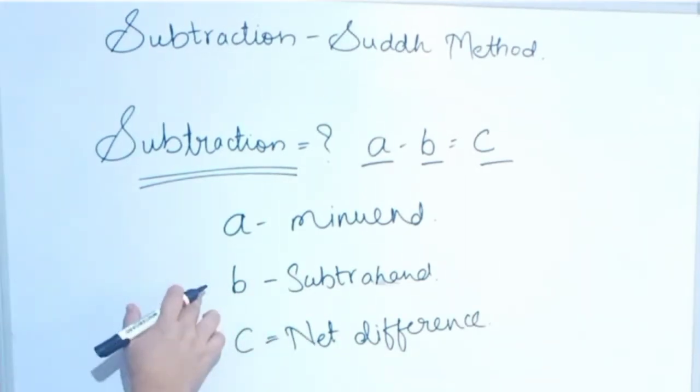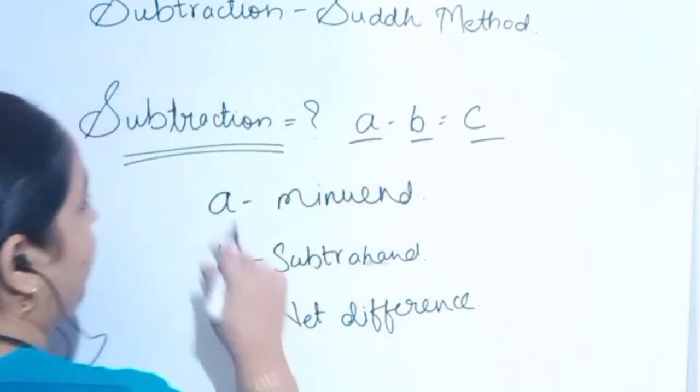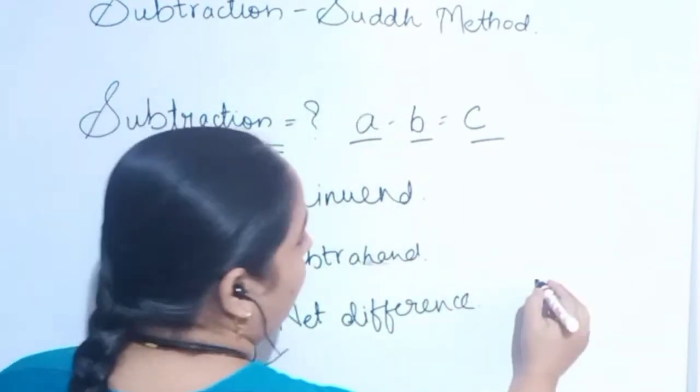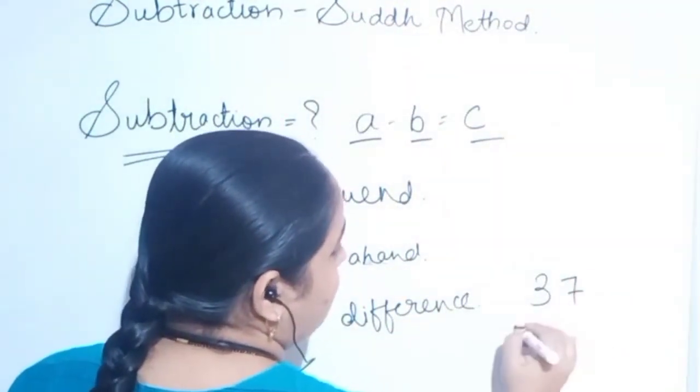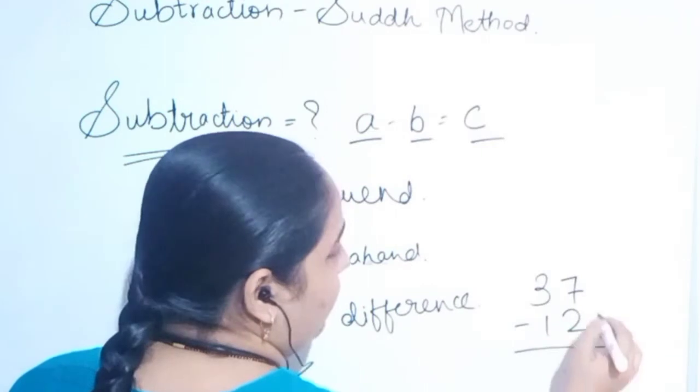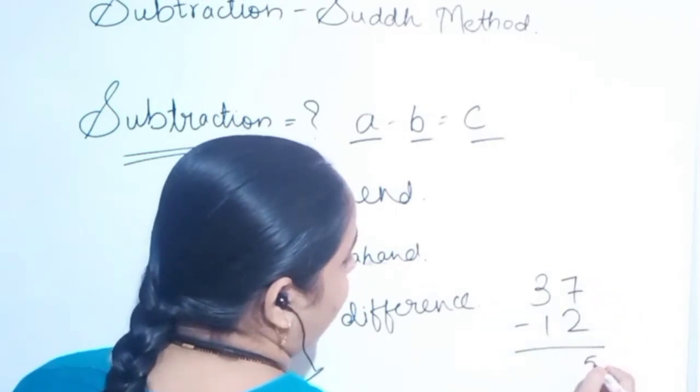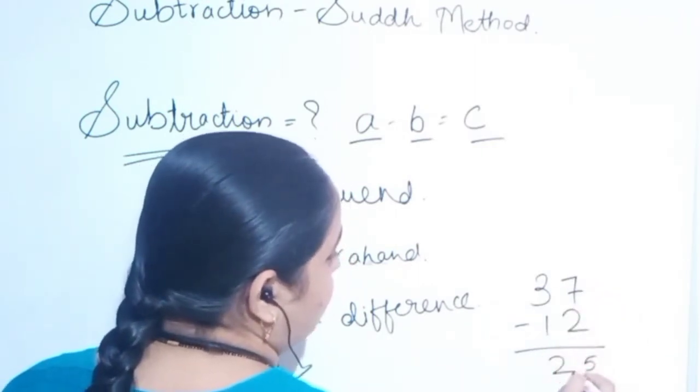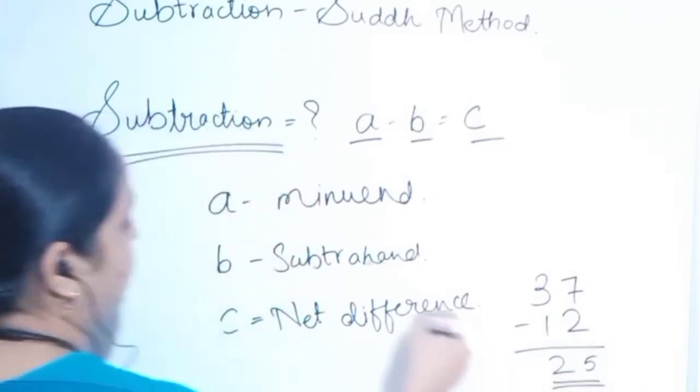Now we will see how to implement in normal subtractions. If we say 37 minus 12, it's simple. 7 minus 2 is 5, 3 minus 1 is 2. This is the simple calculation, right?